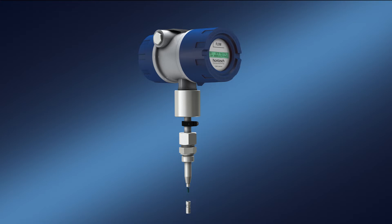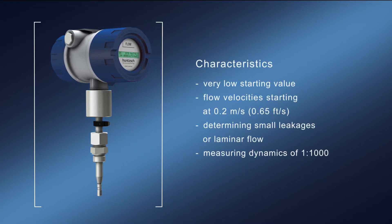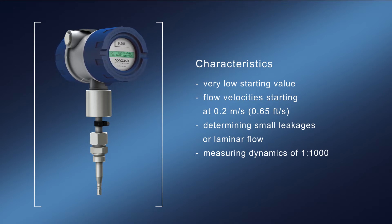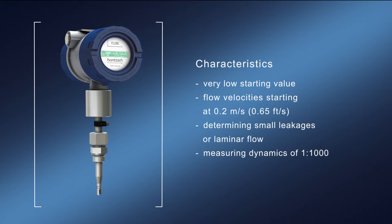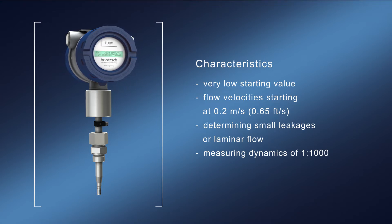The sensor's very low starting value makes it suitable for lowest flow velocities starting at 0.2 meters per second and is therefore ideal for determining leakages and laminar flows. Exceptional! Despite the low starting value, the sensor has a measuring dynamic of 1 to 1000 and therefore delivers exact measuring values in every application.